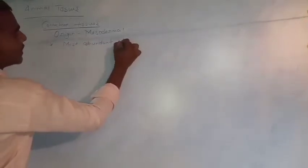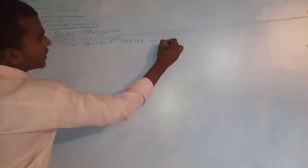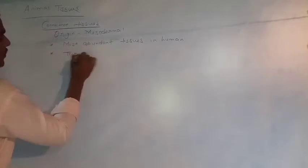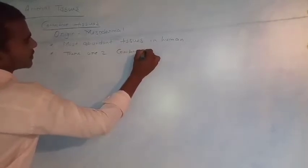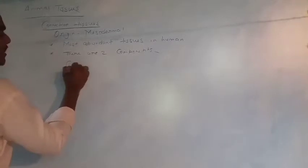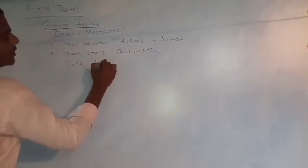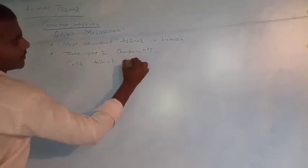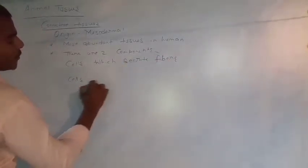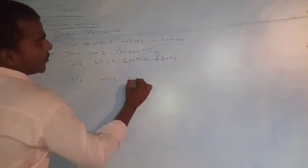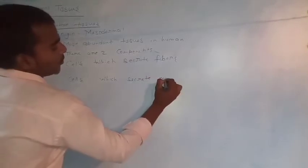Connective tissues are the most abundant tissues found in the human body. There are two components of connective tissues: first, there are some cells which secrete fibers, and second, there are cells which secrete modified polysaccharides.